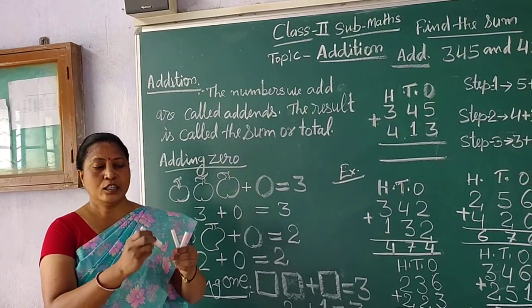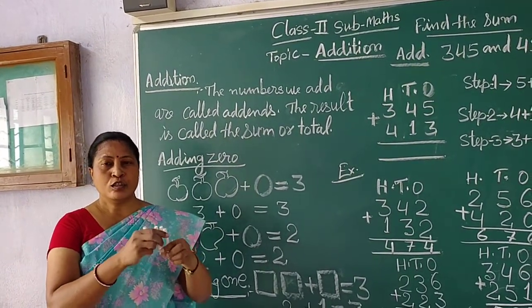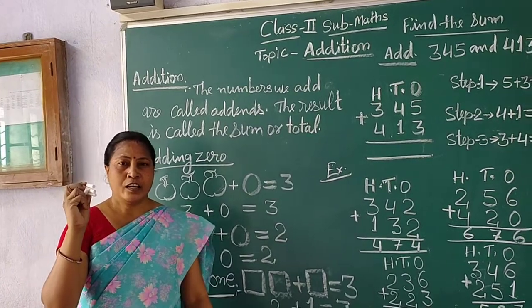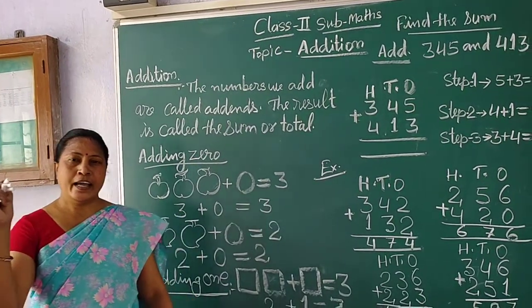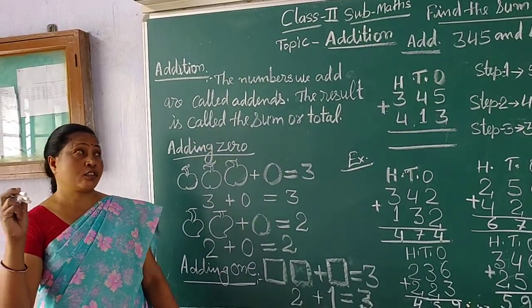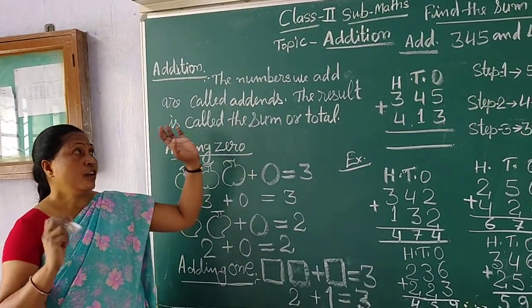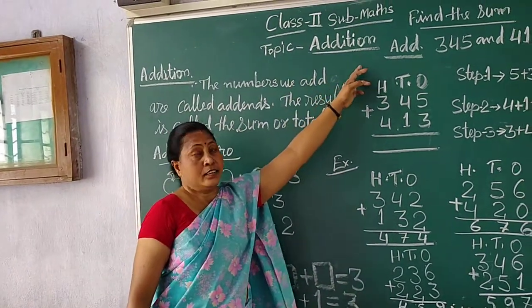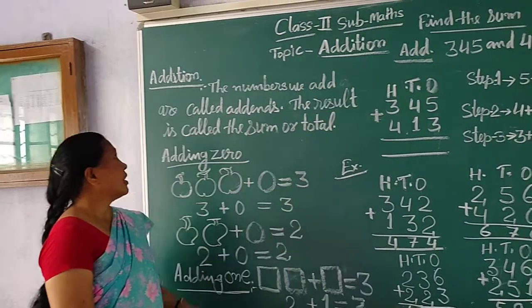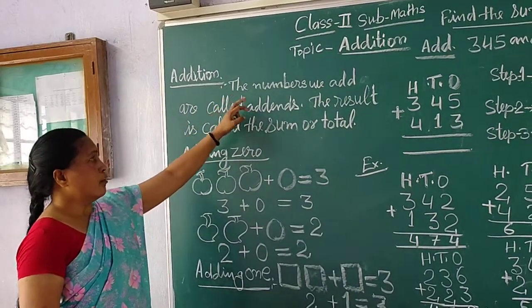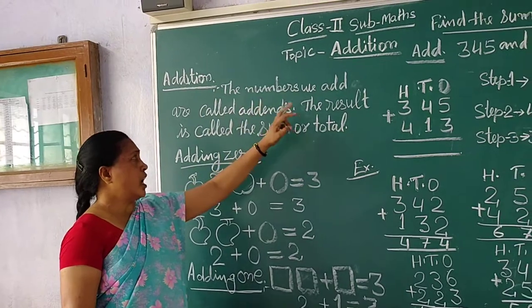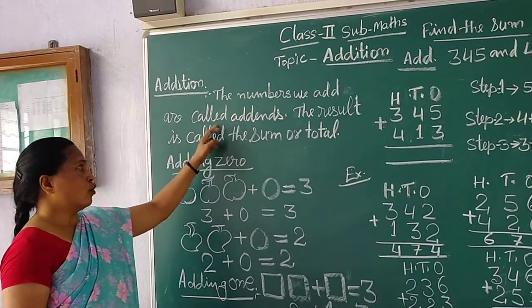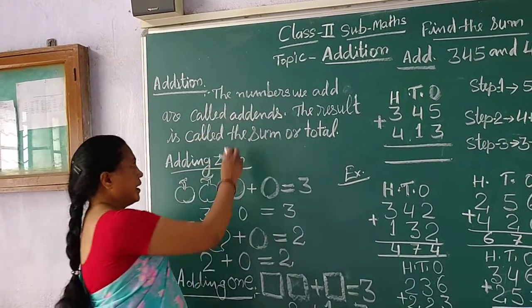So one, two, three, four. In my hand are four pieces. So this is addition. The numbers we add give us four items.